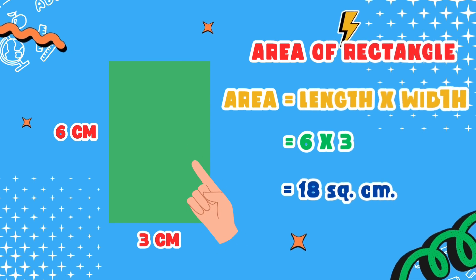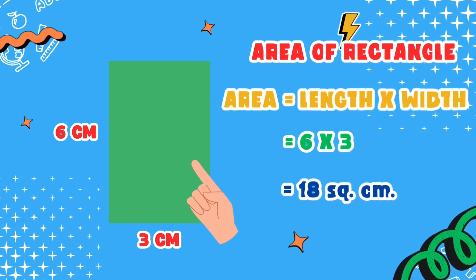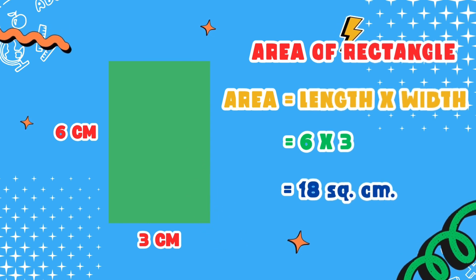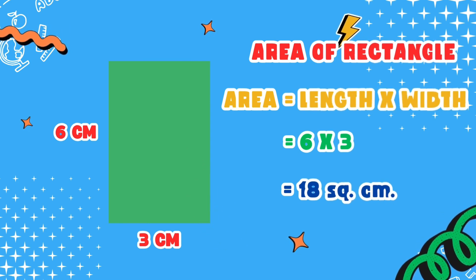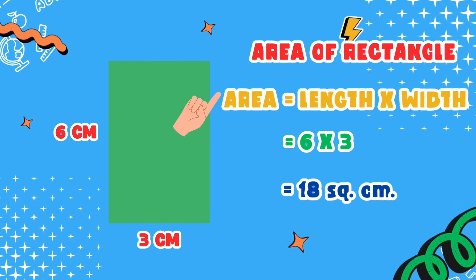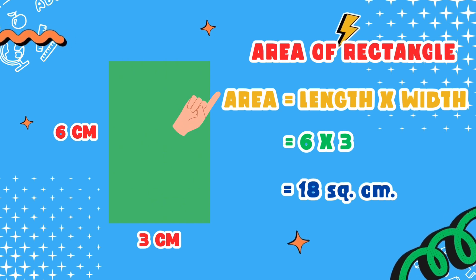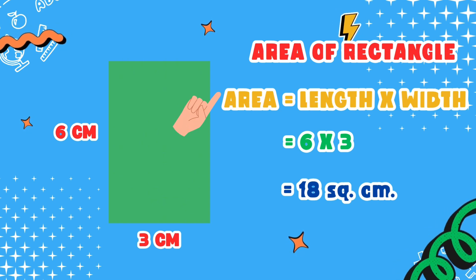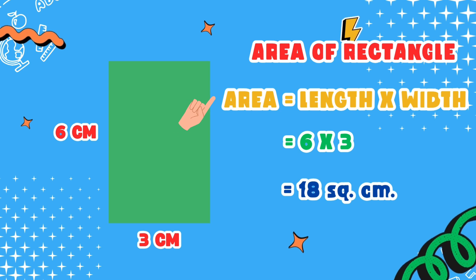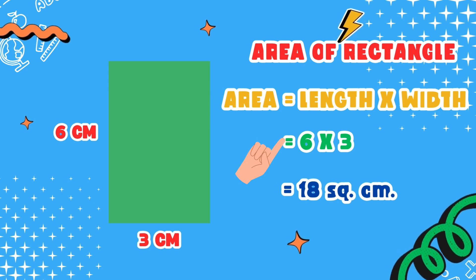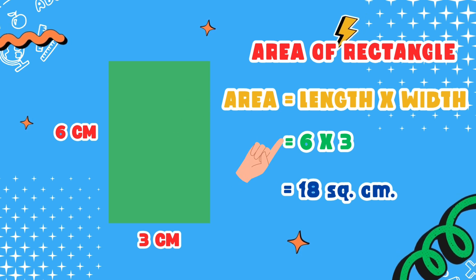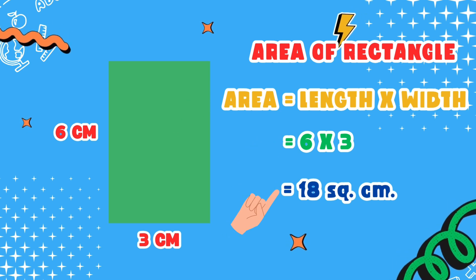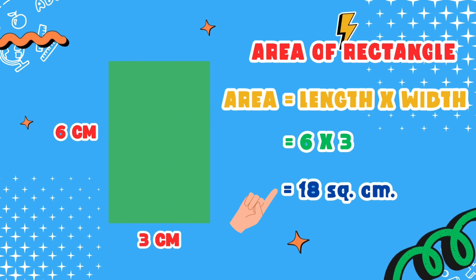A rectangle has two long sides and two short sides. To find its area, multiply the length by the width. So, 6 times 3 equals 18 square centimeters.